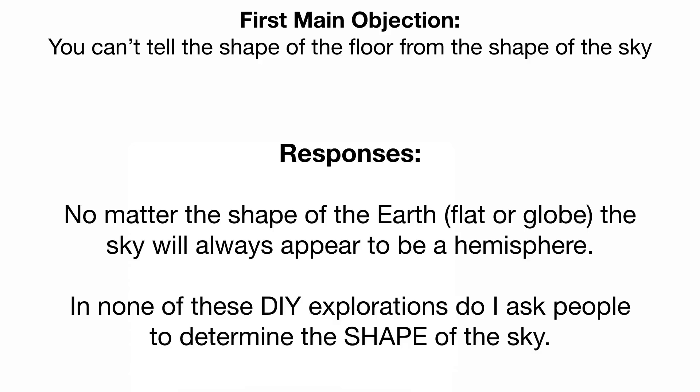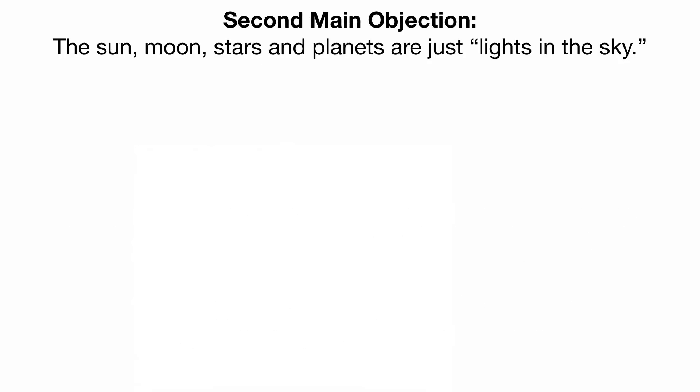The sky appears to be a hemisphere no matter what the shape of the earth is, so none of my do-it-yourself explorations involve finding the shape of the sky. I'm going to focus on different attributes of the Sun, not the shape of the sky.